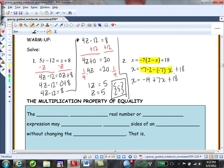So then we'll have x is equal to negative 14 plus 7x plus 18. We can combine the negative 14 and the 18 to get us a result of x is equal to 7x plus 4. Now, what we need to do is we need to get these x's together.